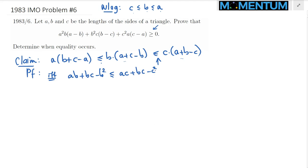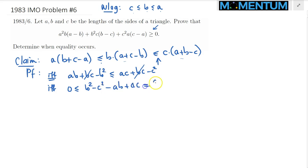We move terms around, moving everything to the right-hand side. The BC terms cancel, so we get: 0 ≤ B² − C² − AB + AC. This factors as (B−C)(B+C) minus (B−C)A, and we can factor out (B−C).